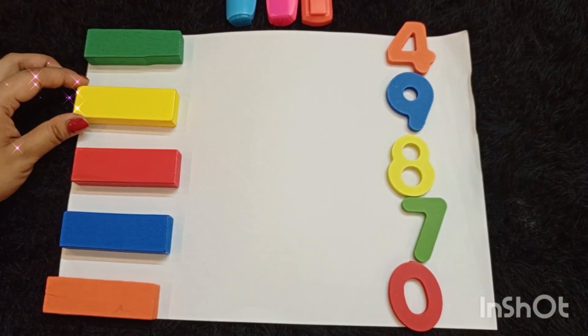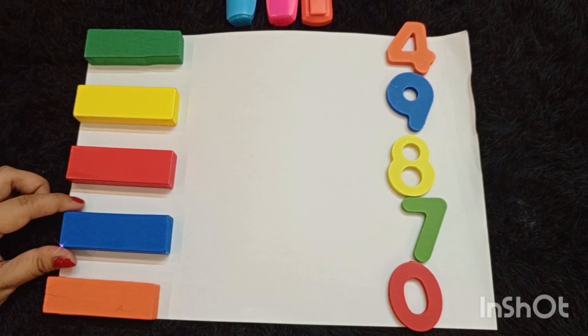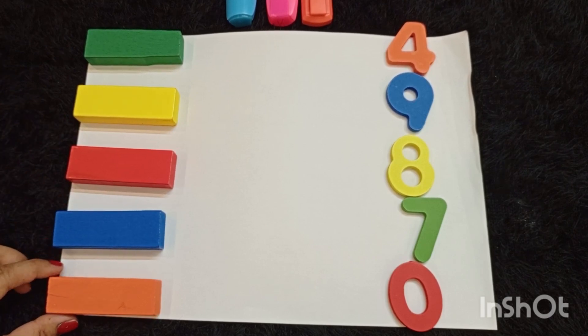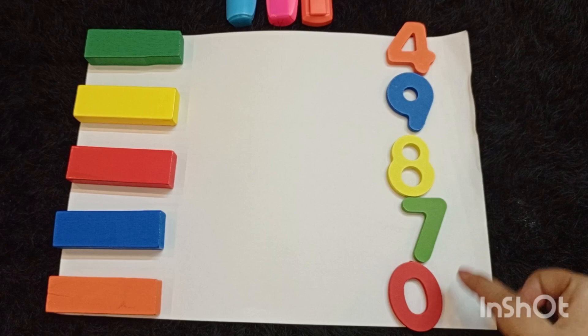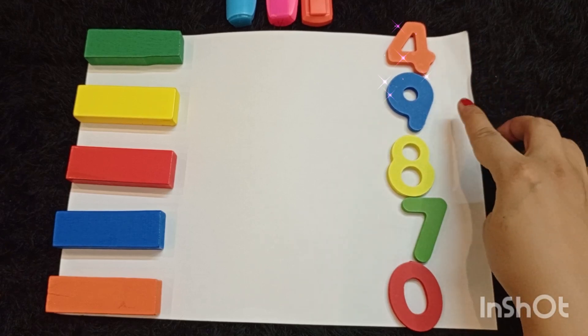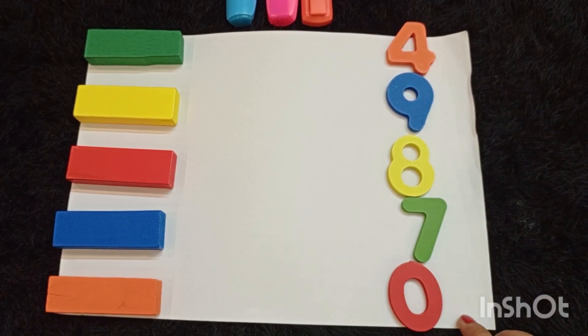Green, yellow, red, blue, and orange. And these are some numbers: 4, 9, 8, 7, and 0.